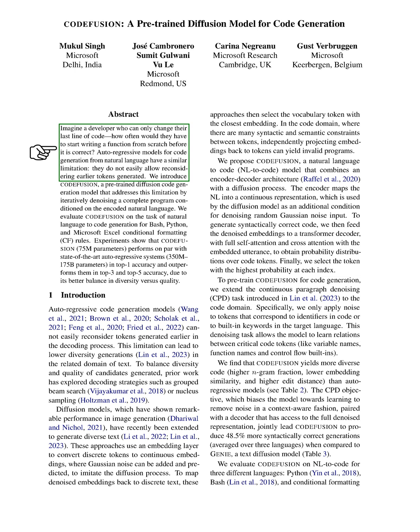Introduction. Let's dive into the topic of auto-regressive code generation models. These models have a limitation: they struggle to reconsider tokens that were generated earlier in the decoding process.